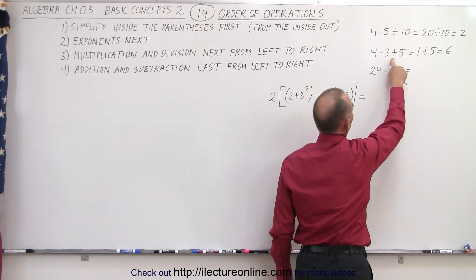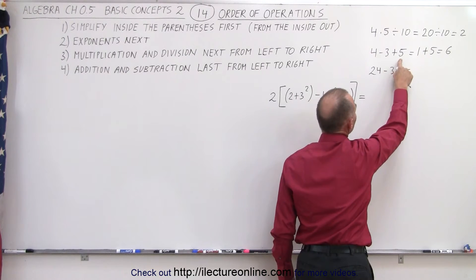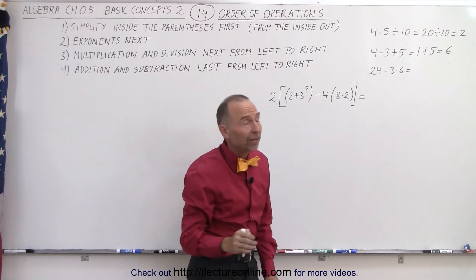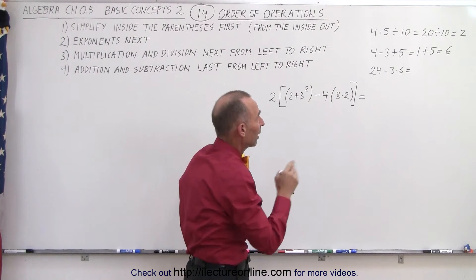We shouldn't do the one on the right first, because if we do 3 plus 5, that gives us 8, and 4 minus 8 gives us a negative 4, and that's a completely different value. So definitely, it is important to work from the left to the right.